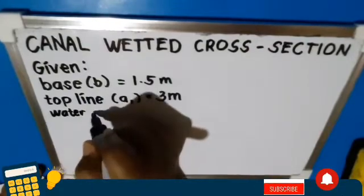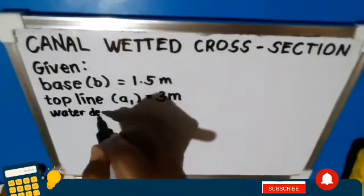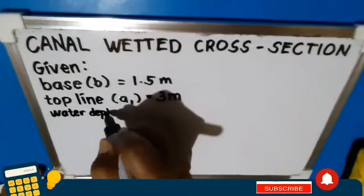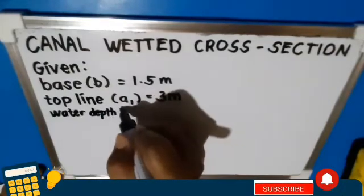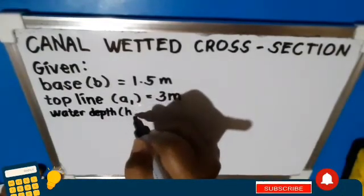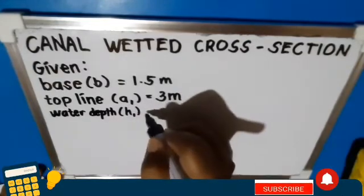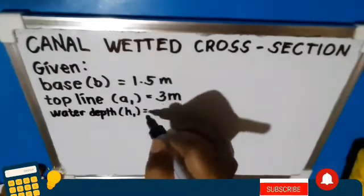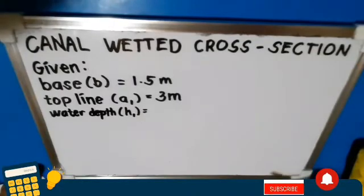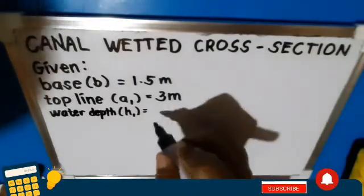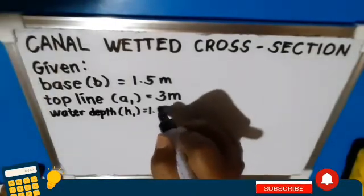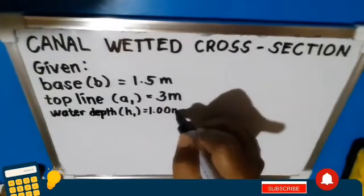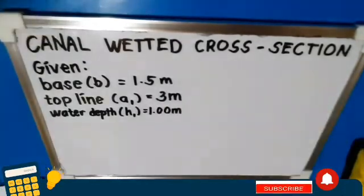We have the given: base B equals 1.5 meters, top line A sub 1 equals 3 meters, and the water depth is 1 meter.